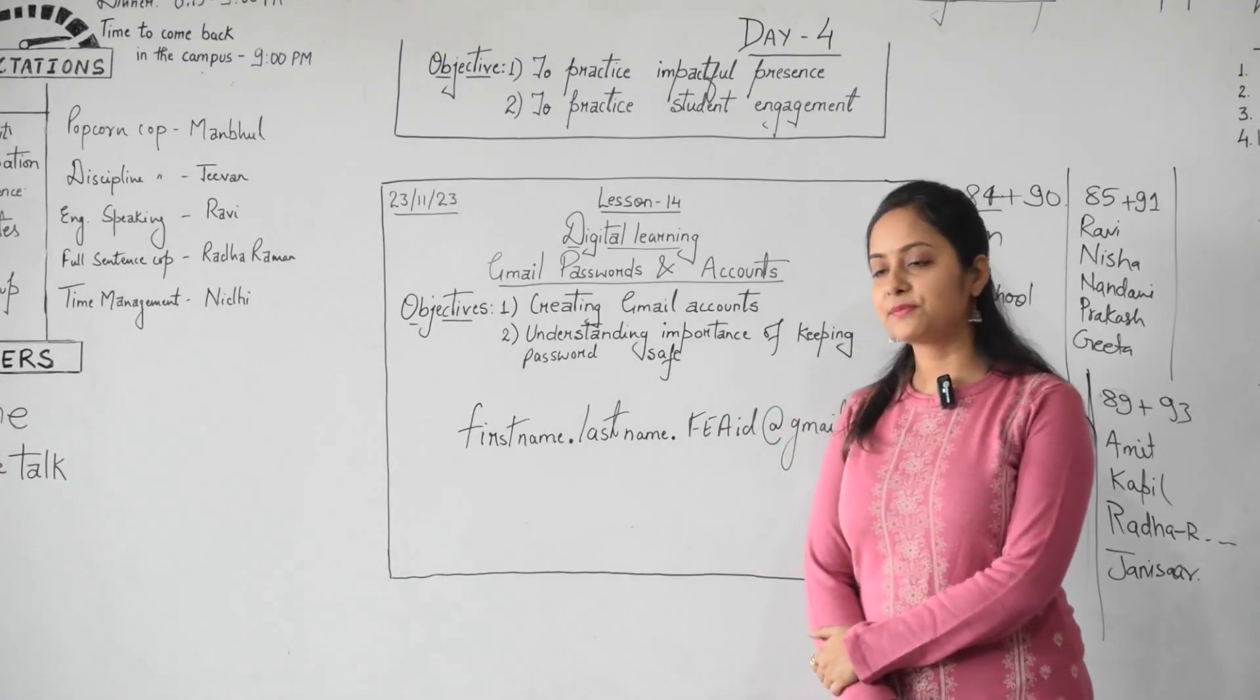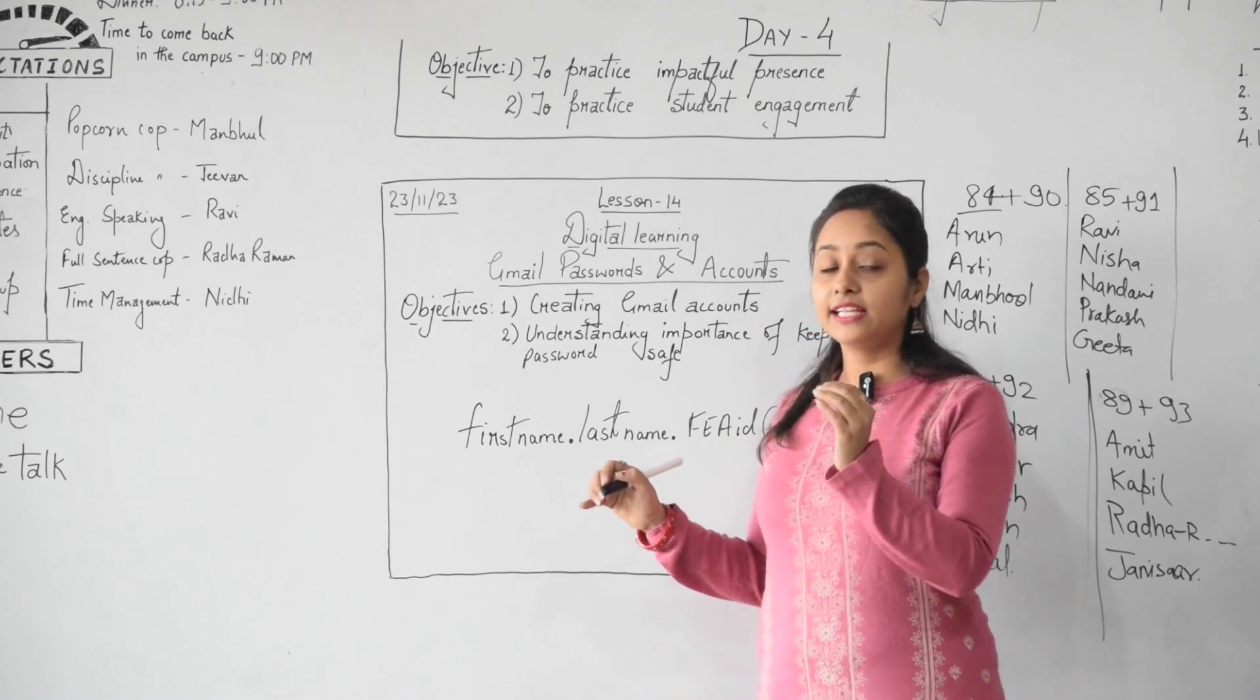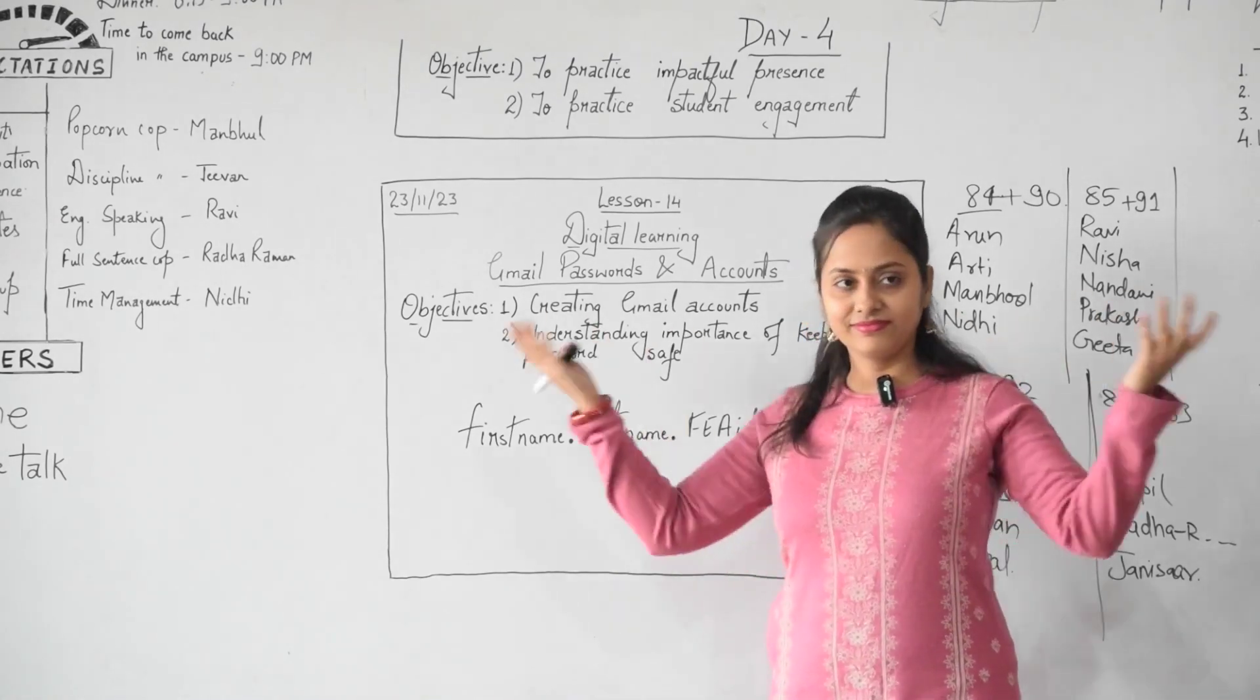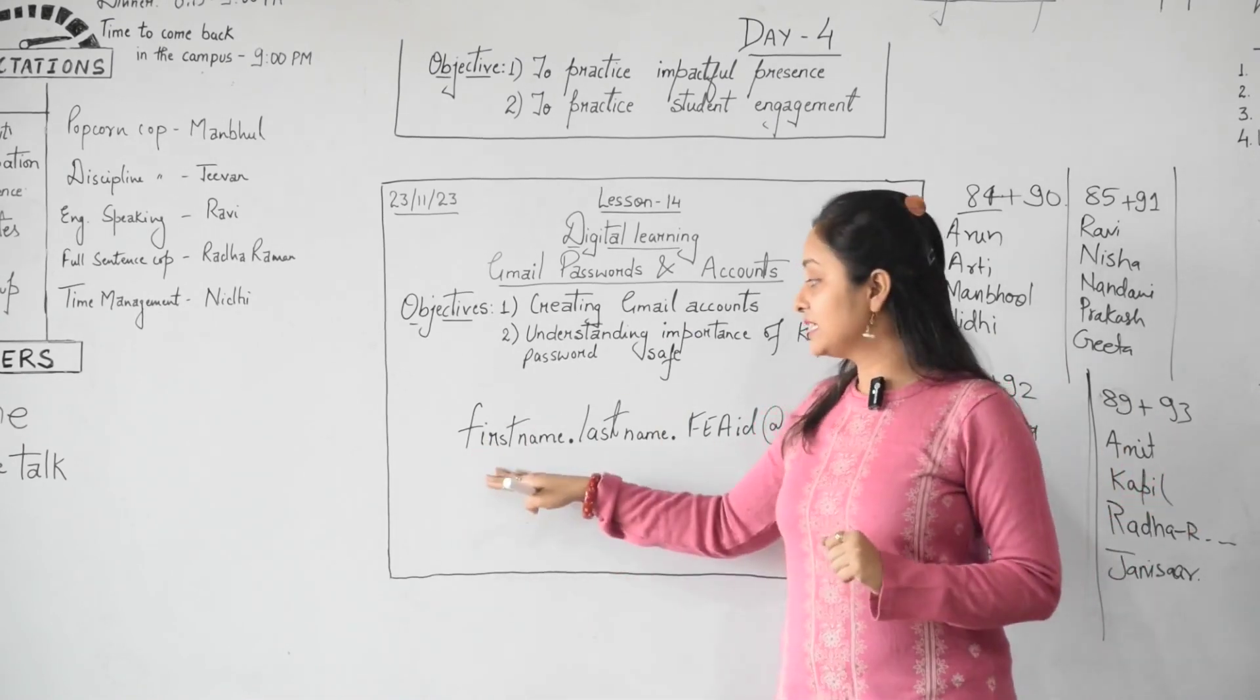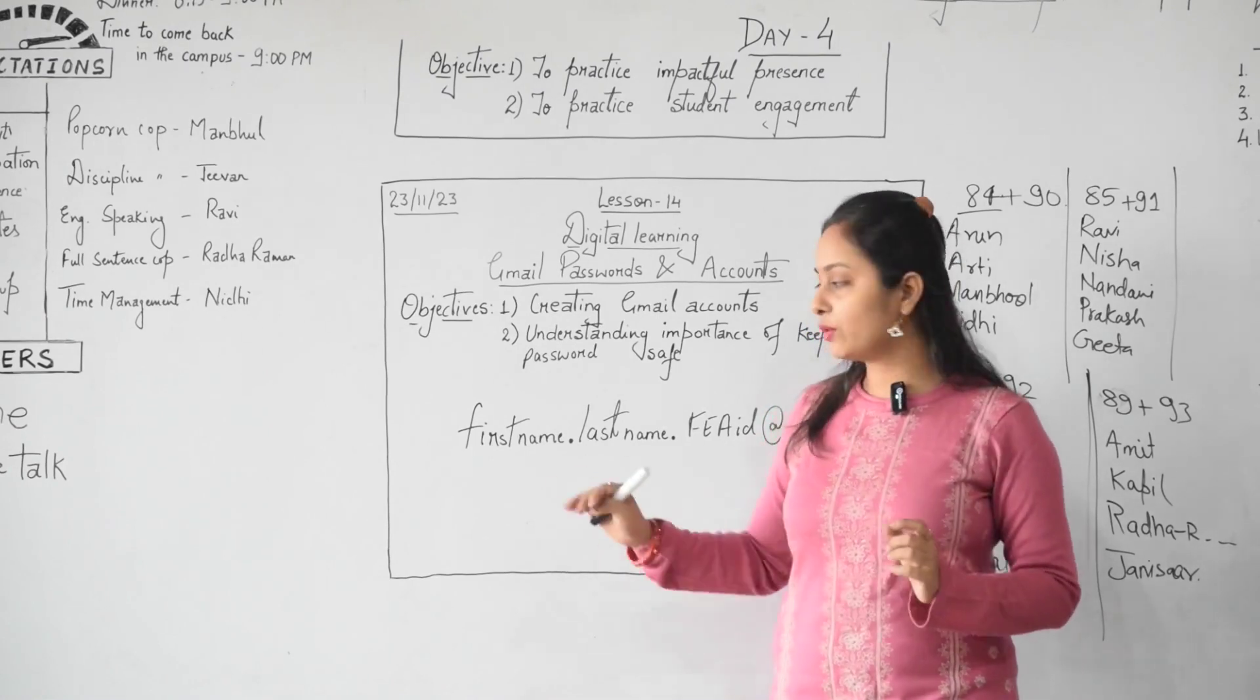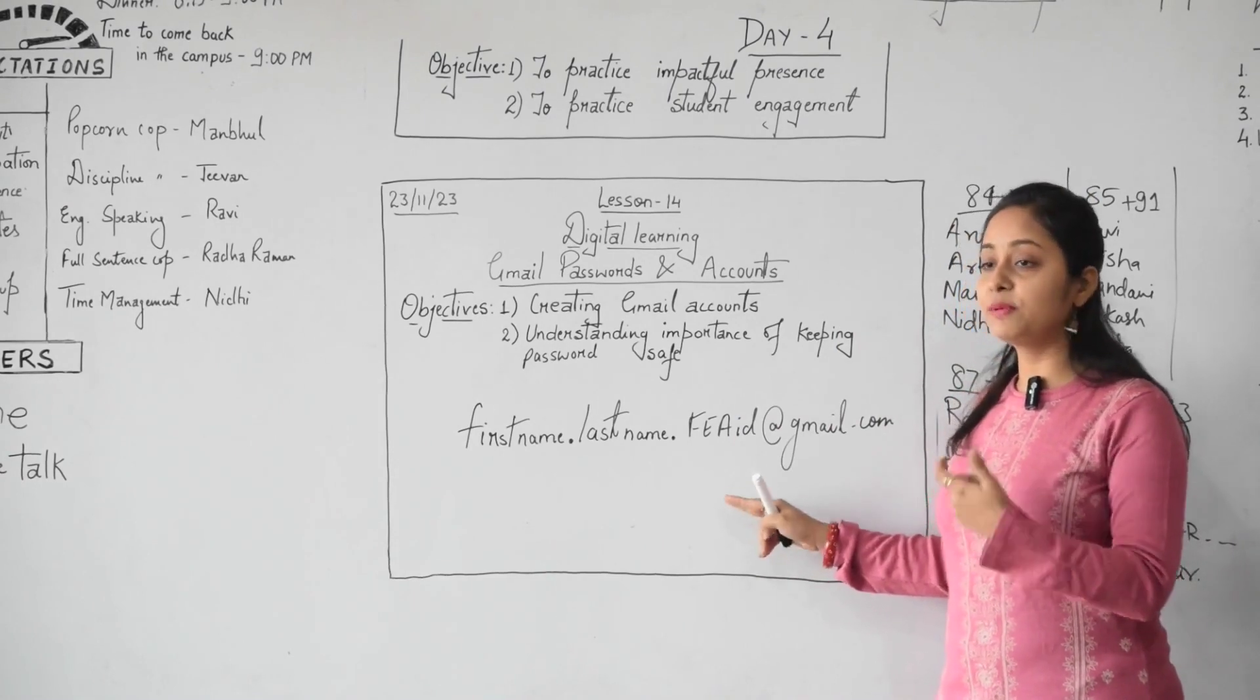I have a question ma'am. So why we are using only this format? Very nice question. We are using this format only because there can be many other people with the same name. Our country and the world is a huge world. So this is why when we create email ID with the same name, then sometimes it doesn't accept. So what we are going to do? We are going to make our email IDs unique by using some dots and by using FEA ID. And FEA ID cannot be same for everybody.